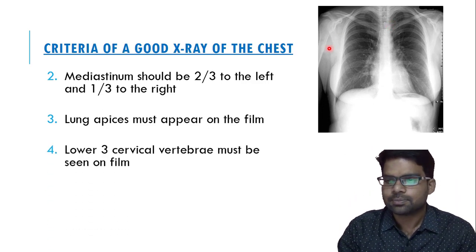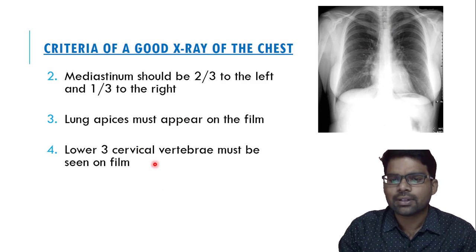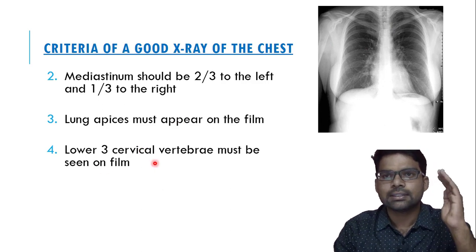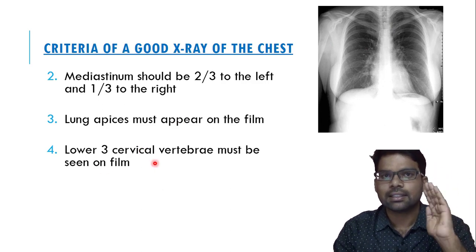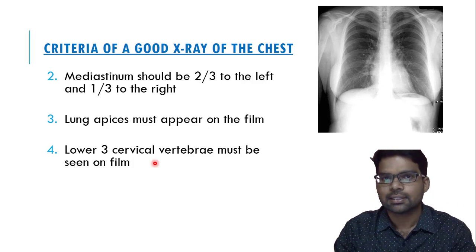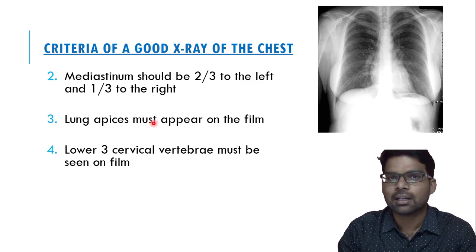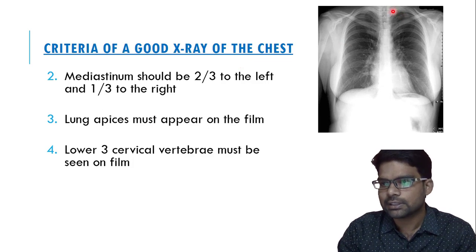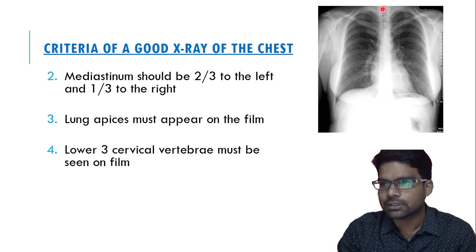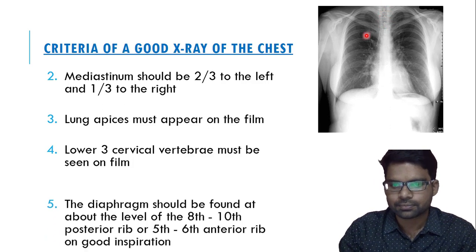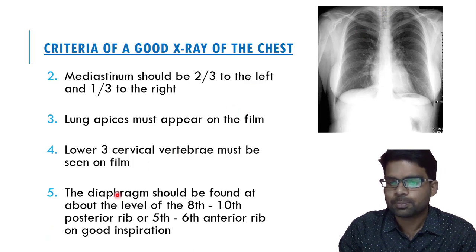The fourth point: the lower three cervical vertebrae - C5, C6, C7 - should be visible on the chest X-ray. In this film, those three lower cervical vertebrae are visible.